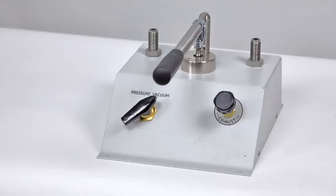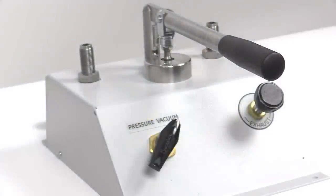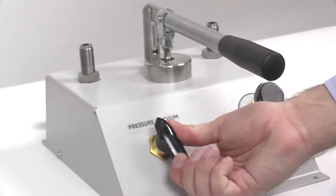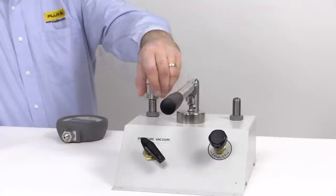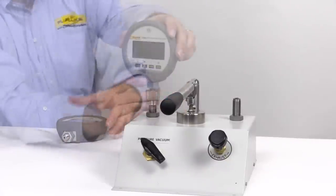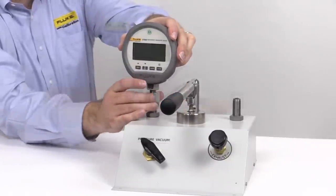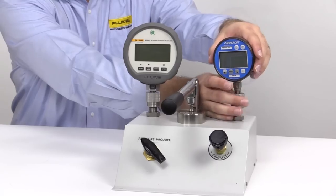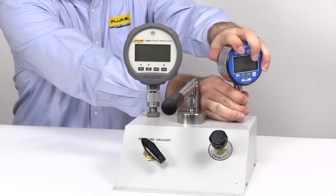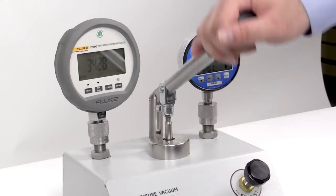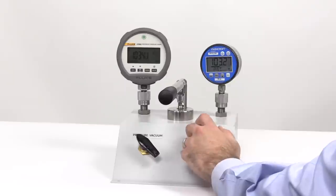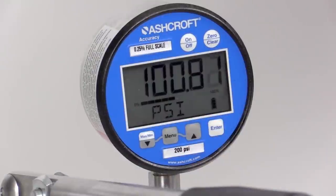Use the P5510 when you need to generate vacuum to 2 MPa or 300 psi. The selector valve allows for easy switching between vacuum and positive pressure. The reference gauge and device under test are connected using the same technique as the P5515. Pressure is easily generated using the pump. The vent needle valve can be used to both vent and fine tune the pressure.